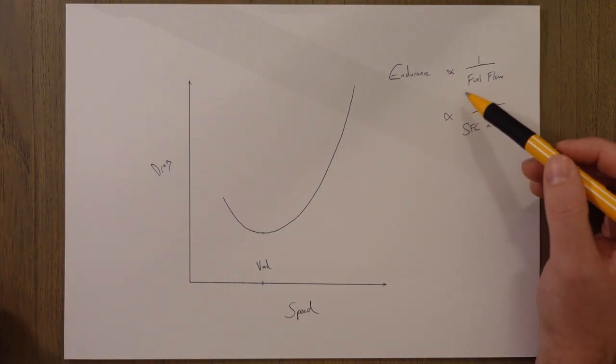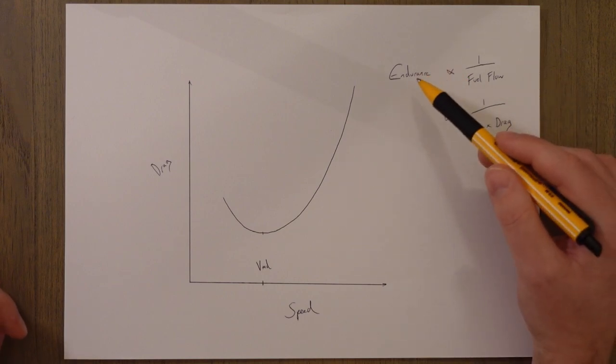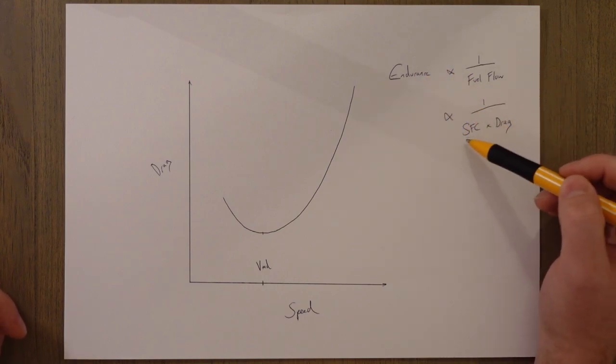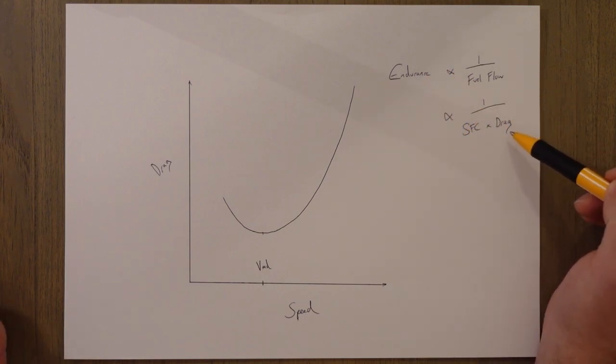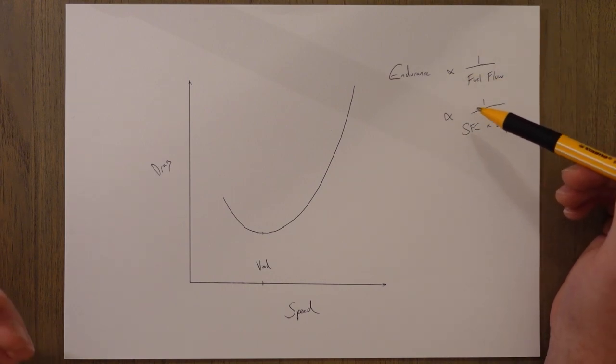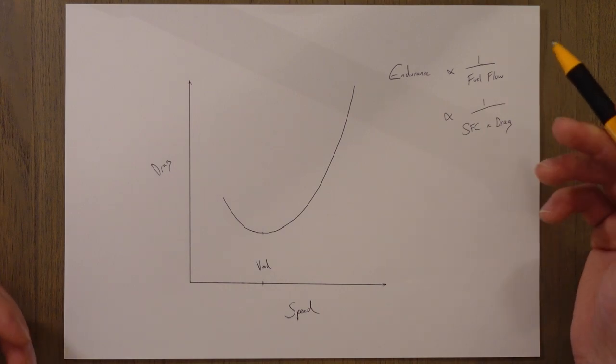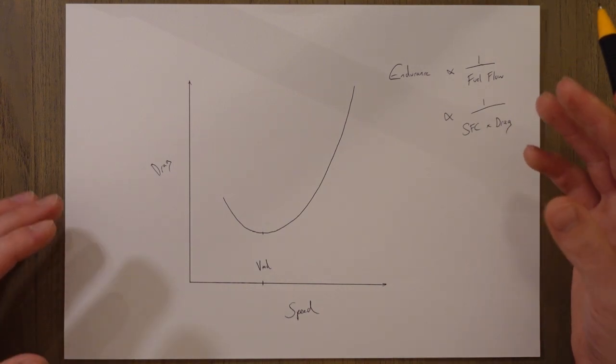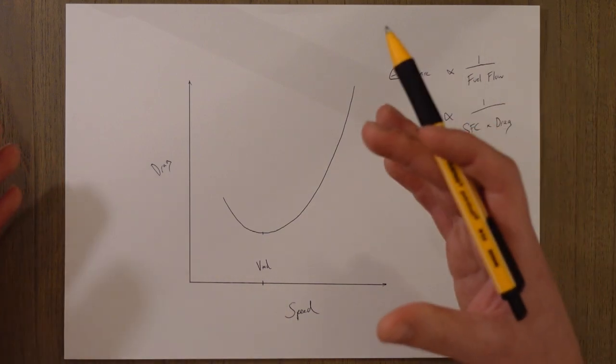We can therefore make an equation for endurance that looks like this: endurance varies according to one over specific fuel consumption multiplied by drag. Notice it's not the equal symbol but it's the varies according to, this is because it's not as simple as that and we need to consider a few other factors which we're going to have a look at.